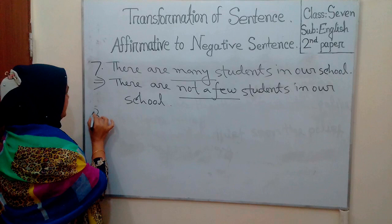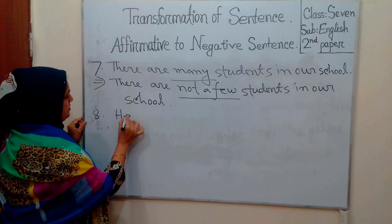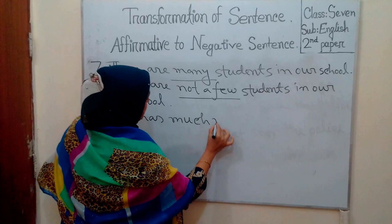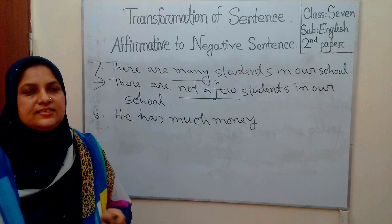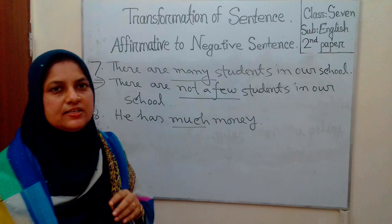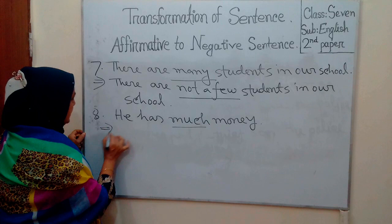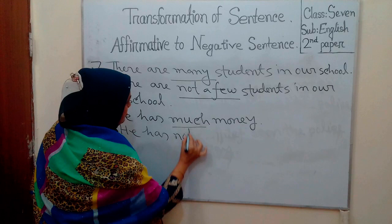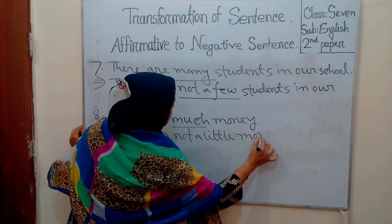Rule 8. If there is 'much' in the affirmative sentence, it should be changed into a negative sentence using 'not a little'. For example: 'He has much money.' Negative sentence: 'He has not a little money.' So 'much' becomes 'not a little'.